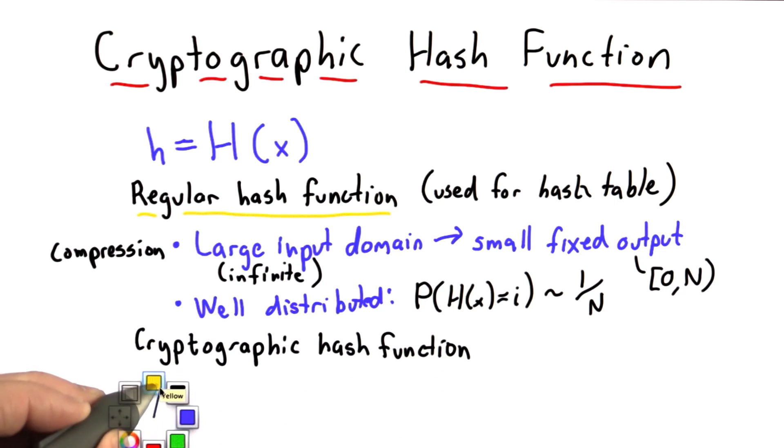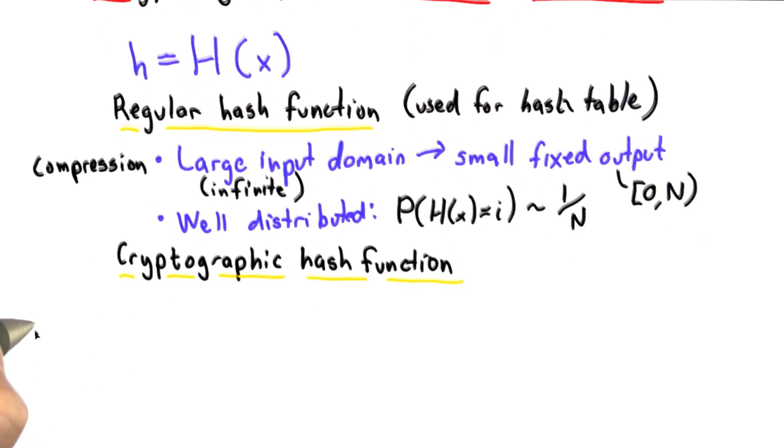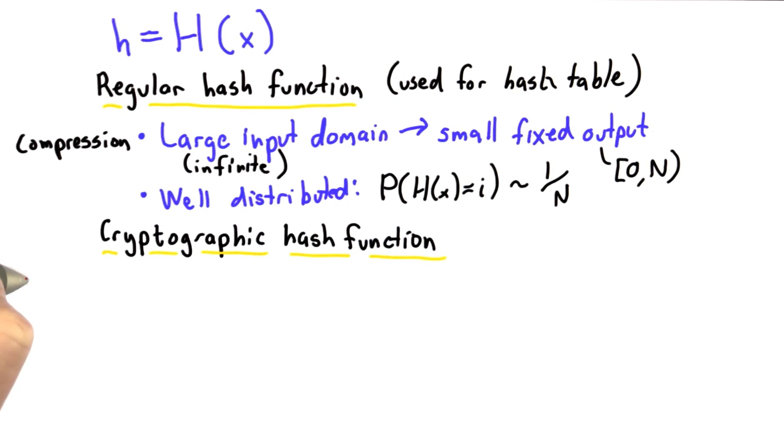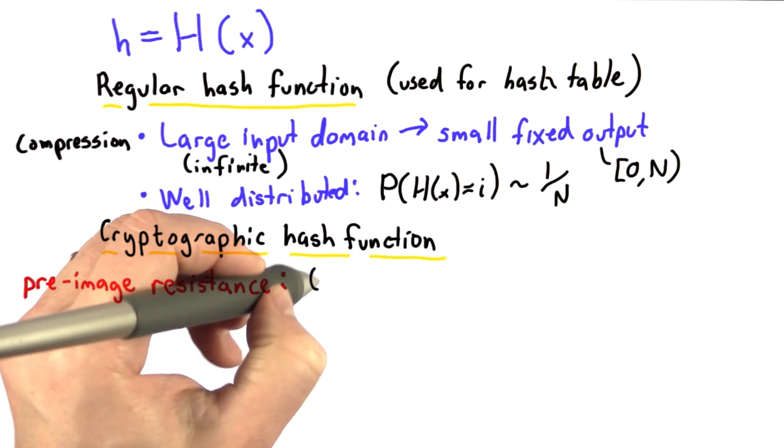What we need for a cryptographic hash function is three additional properties. The properties are pre-image resistance, which means given the output of the hash function, it's hard to find the input that produced it. This is a form of one-wayness.